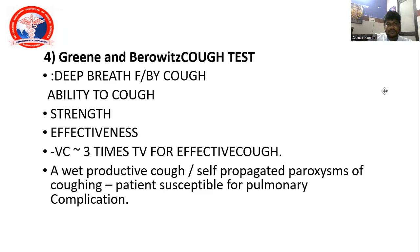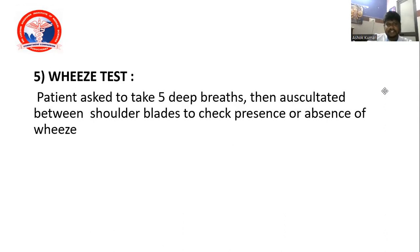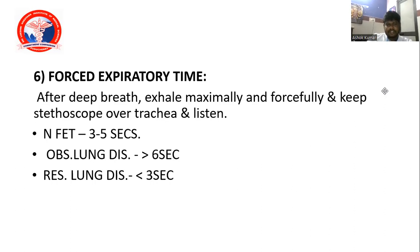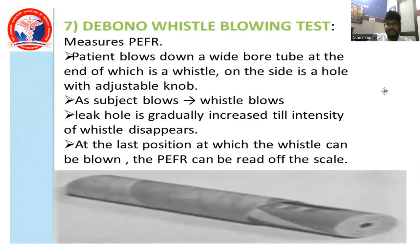Reanay-Varovic soft test: Ask the patient to take a deep breath followed by a cough. A patient having ability to cough has adequate effectiveness and vital capacity. Three-times-three for effective coughing — await protective cough. Force expiry time test: after deep breath, exhale maximally and keep stethoscope over the trachea. Normal force expiry time is 3–5 seconds; in obstructive lung disease more than 6 seconds; in restrictive lung disease less than 3 seconds.